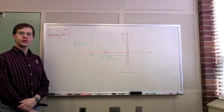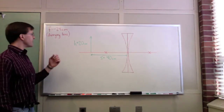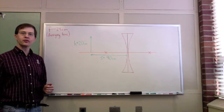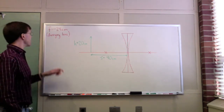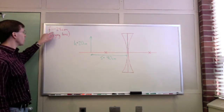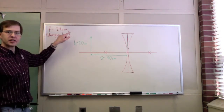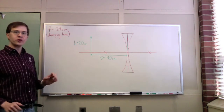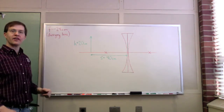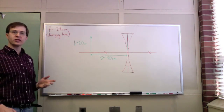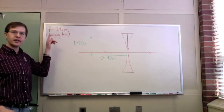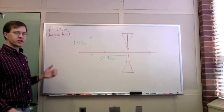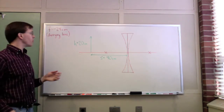I've got one more example to do — this time an example with a diverging lens. This is a diverging lens with a focal length of 24 centimeters. Conventionally, we use negative 24 to represent the fact that it's a diverging lens; the negative sign is what represents that diverging part.